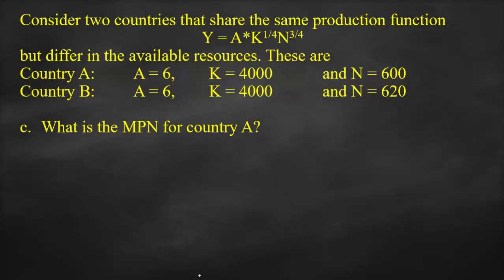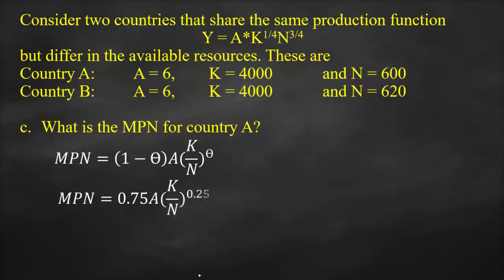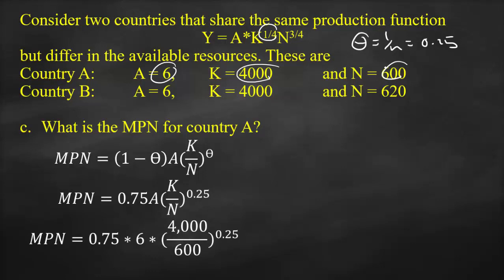The next part asks for the marginal product of labor for Country A. Using the formula: MPN = (1-θ) × A × (K/N)^θ, where θ = 1/4 = 0.25, so (1-θ) = 0.75. Substituting A = 6, K = 4,000, and N = 600: MPN = 0.75 × 6 × (4000/600)^0.25, which gives MPN = 7.2309.